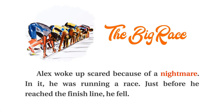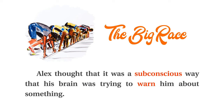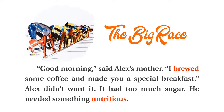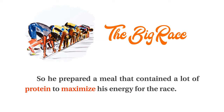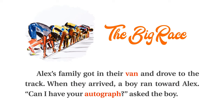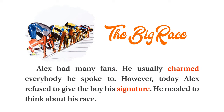The Big Race. Alex woke up scared because of a nightmare. In it, he was running a race. Just before he reached the finish line, he fell. Alex thought that it was a subconscious way that his brain was trying to warn him about something. He was going to run in a race that day. Did the dream mean he was going to lose? He became irritable. Good morning, said Alex's mother. I brewed some coffee and made you a special breakfast. Alex didn't want it. It had too much sugar. He needed something nutritious. So he prepared a meal that contained a lot of protein to maximize his energy for the race. Then his father asked, Do you want help packing your stuff? No, replied Alex. He wanted to make sure that he had all of his equipment for the race. Alex's family got in their van and drove to the track. When they arrived, a boy ran toward Alex. Can I have your autograph? asked the boy. Alex had many fans. He usually charmed everybody he spoke to. However, today Alex refused to give the boy his signature.